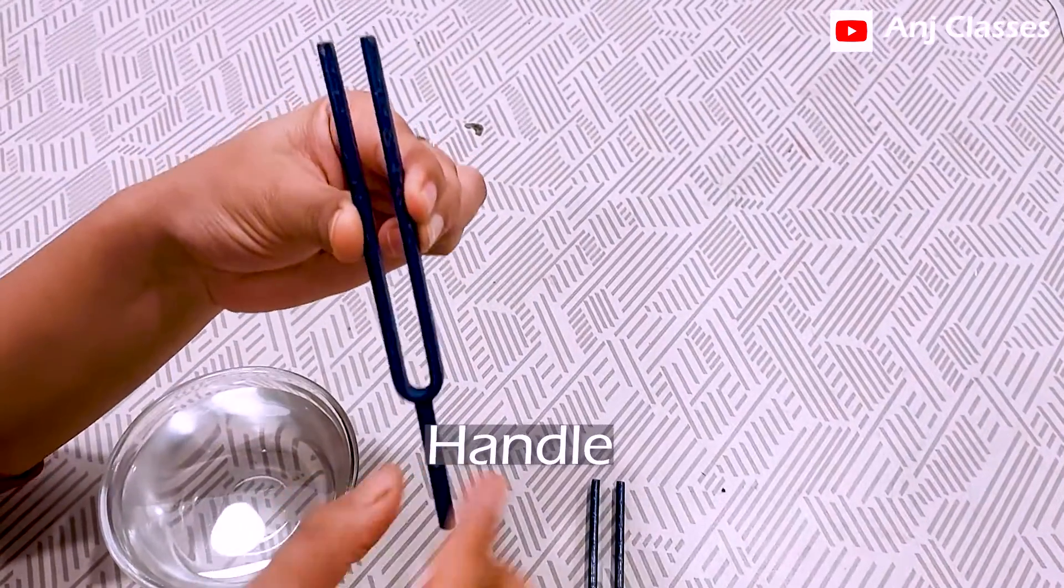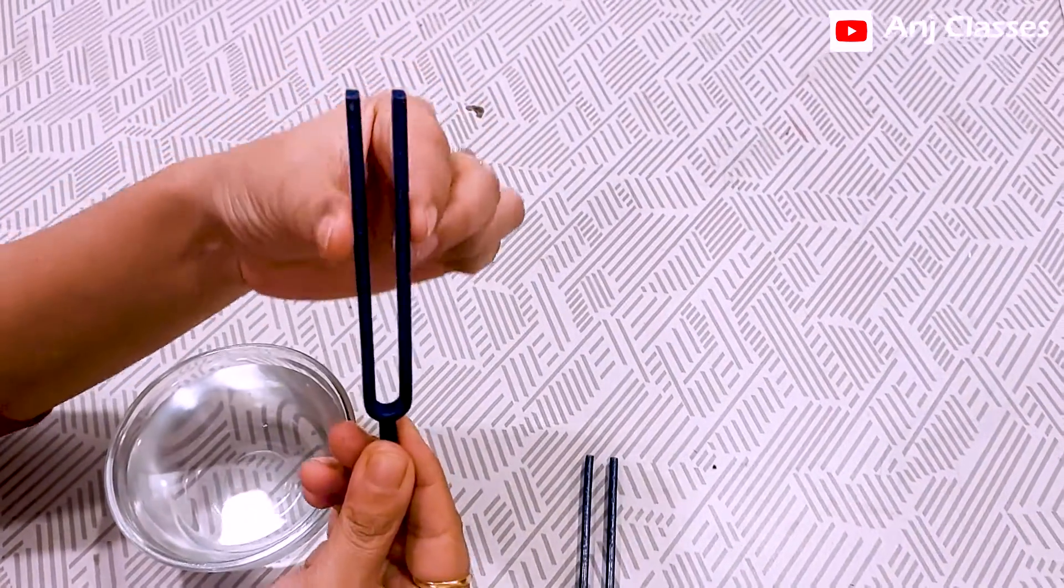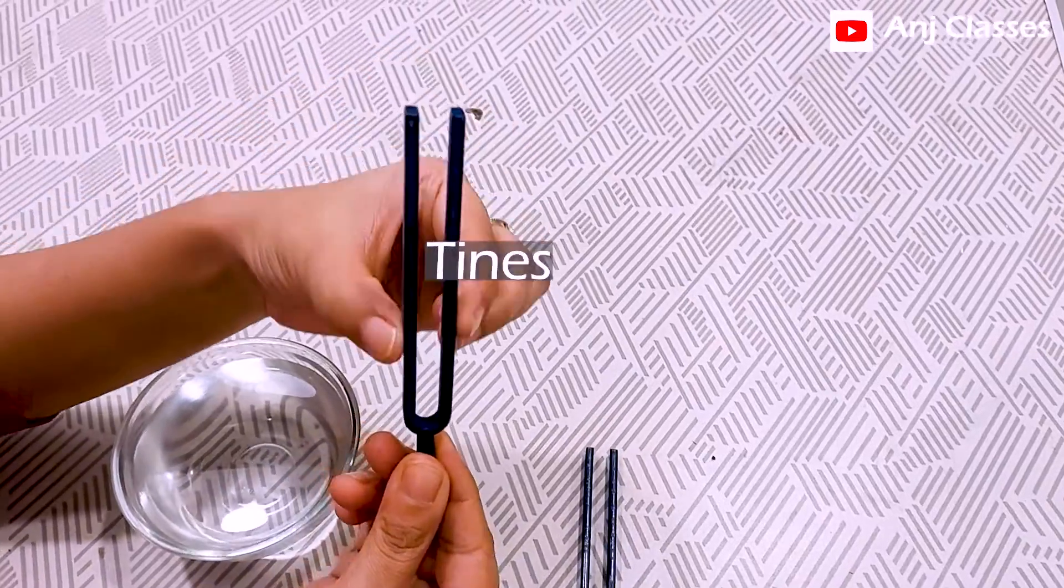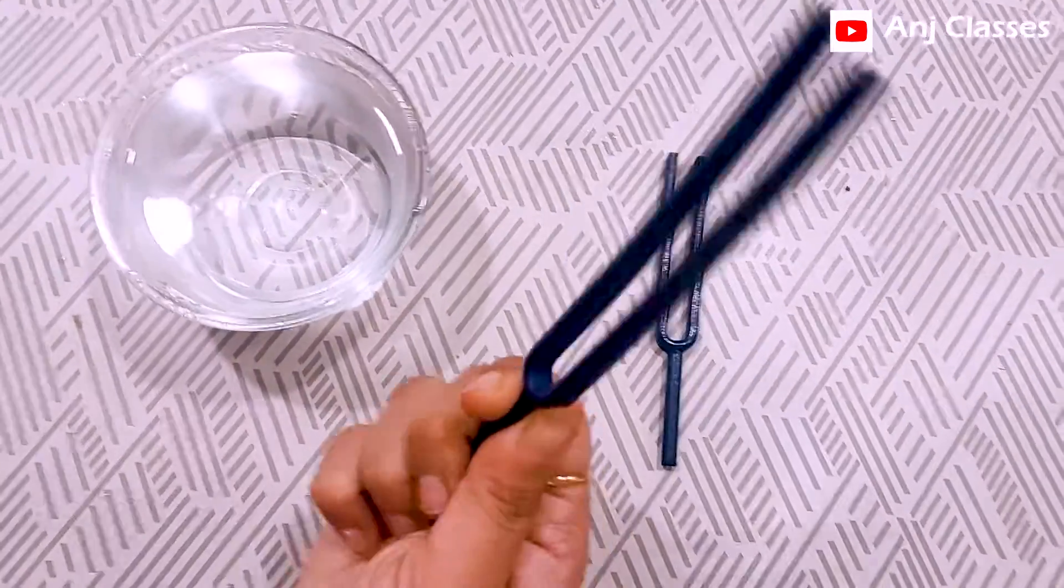This part is called the handle of the tuning fork, and this part is called the prong or tines. Now I will strike this tuning fork on a hard surface. Let's see what happens.